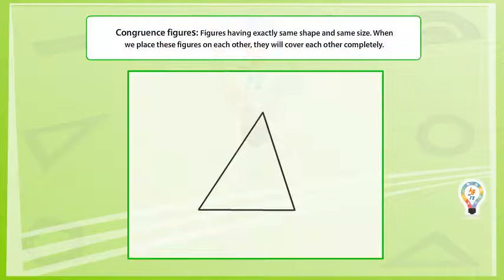A closed figure formed by three intersecting lines is called a triangle. A triangle has three sides, three angles, and three vertices.